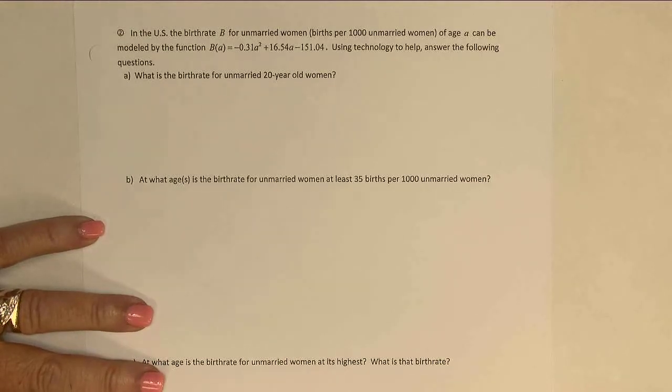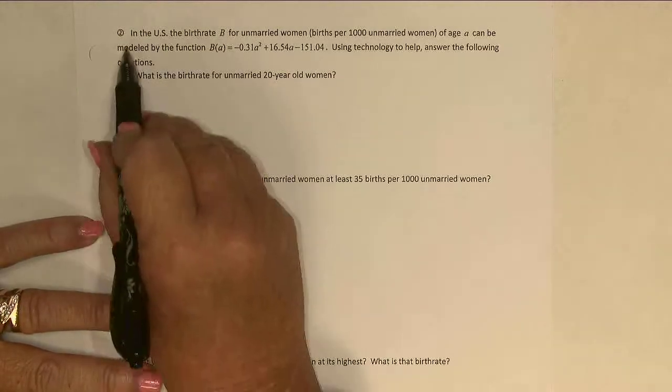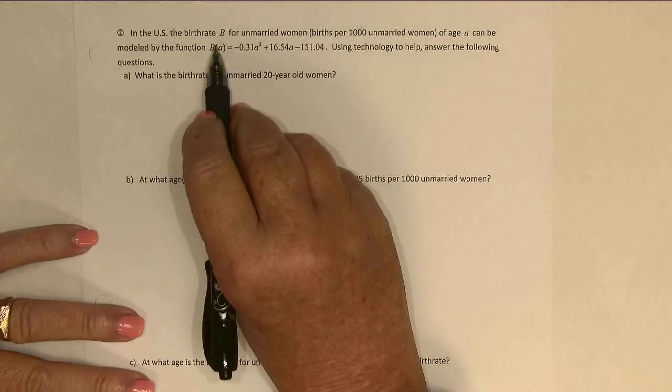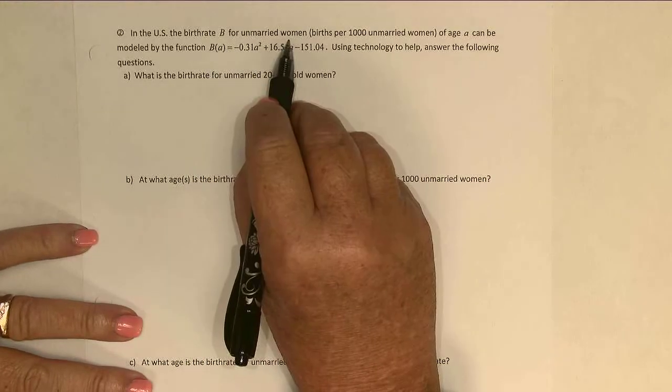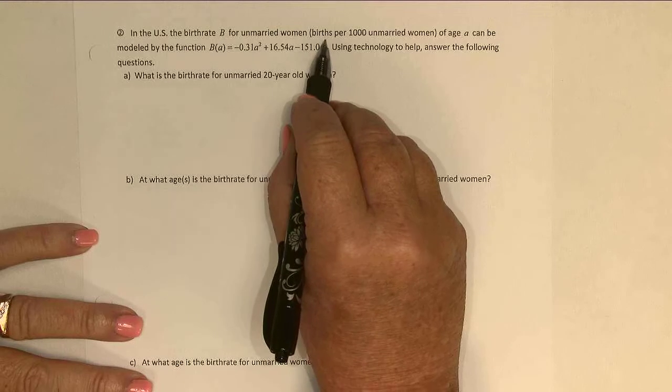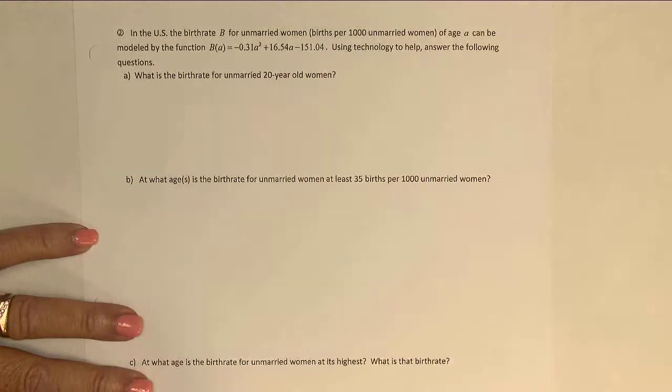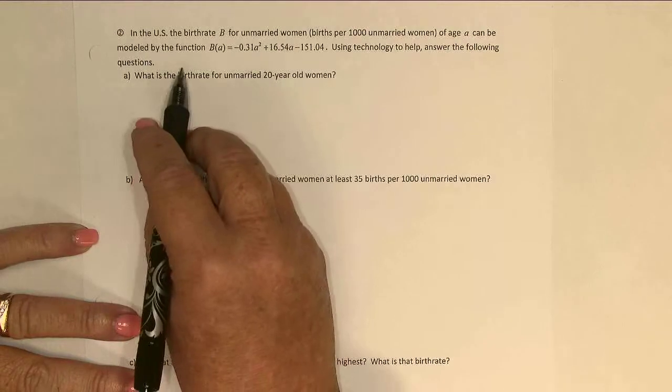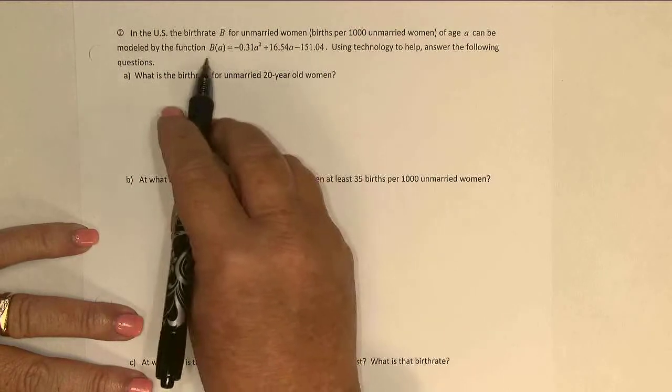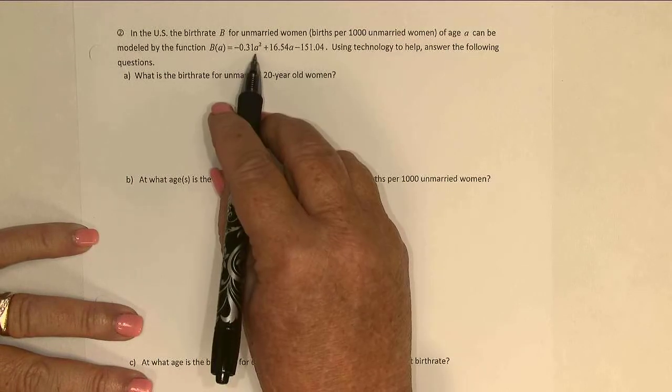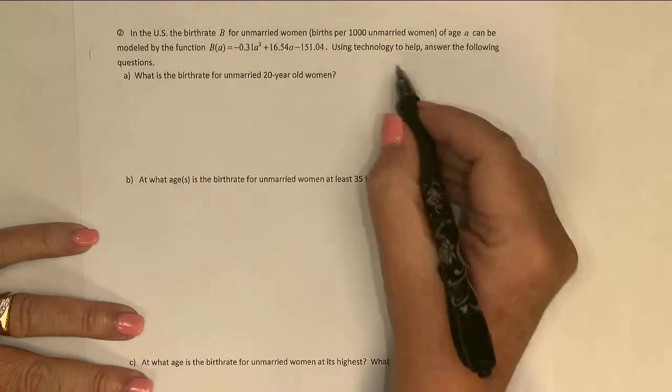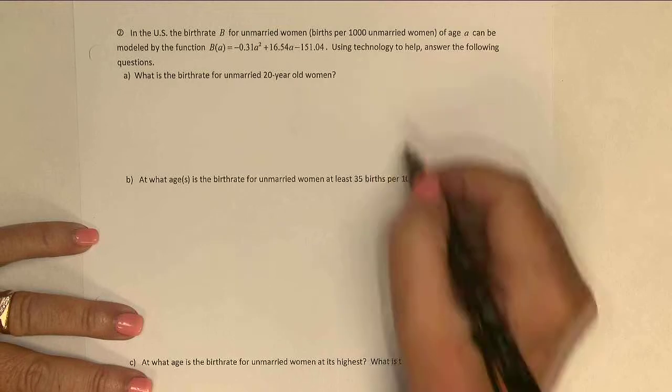Continuing Section 1.8 on Quadratic Modeling, we'll take a look at Example 2. In the United States, the birth rate B for unmarried women, in units of births per 1,000 unmarried women at age A, can be modeled by this function B(A), and notice it is a quadratic function. We're allowed to use technology this time to solve, so using our technology to help, we'd like to answer the following questions.